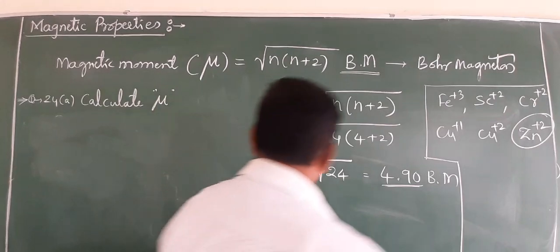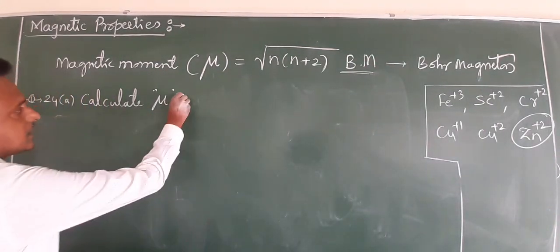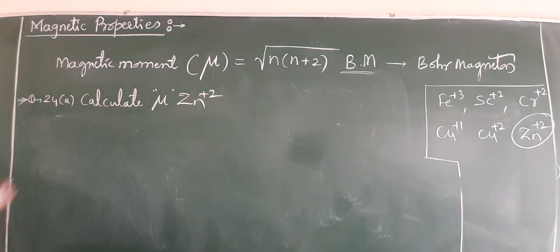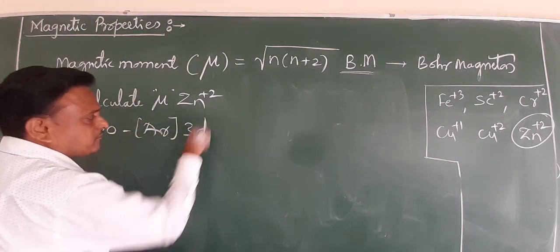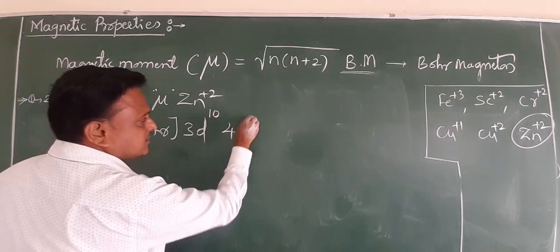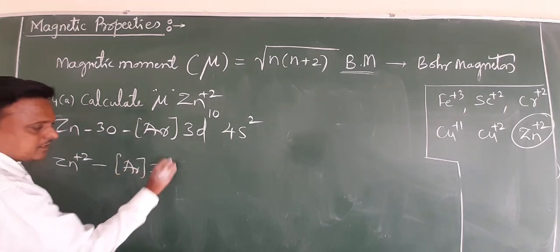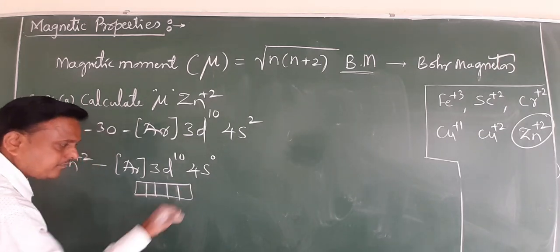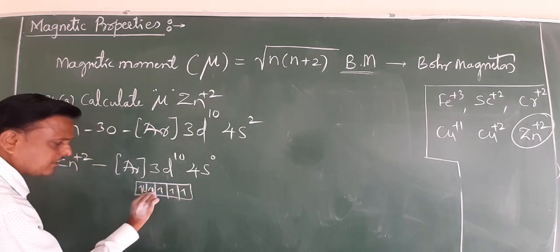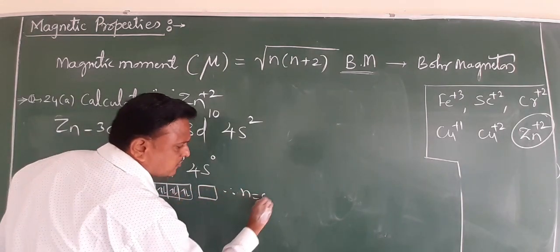You can calculate Zn²⁺. Zinc has atomic number 30, configuration [Ar] 3d¹⁰ 4s². Zn²⁺ means loss of 2 electrons: [Ar] 3d¹⁰ 4s⁰. The d orbital has all 10 electrons paired: 1, 2, 3, 4, 5, 6, 7, 8, 9, 10. There are no unpaired electrons. Therefore, n = 0.